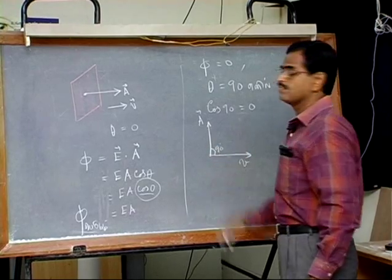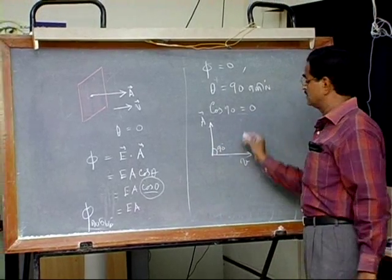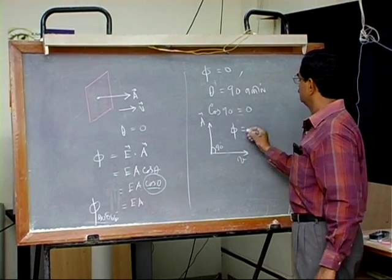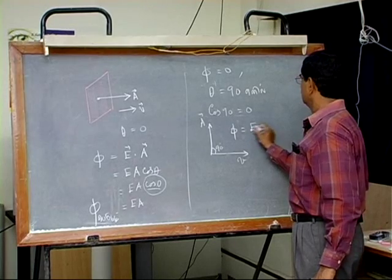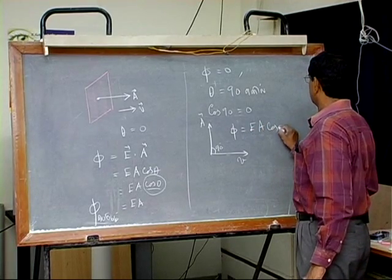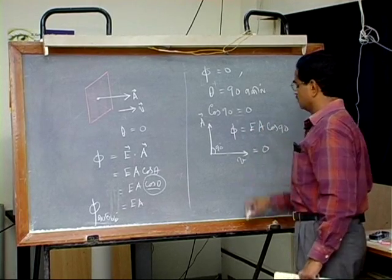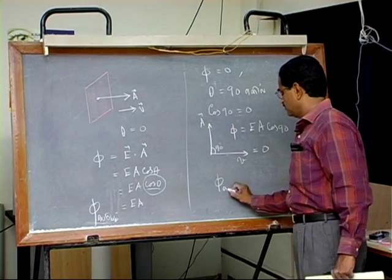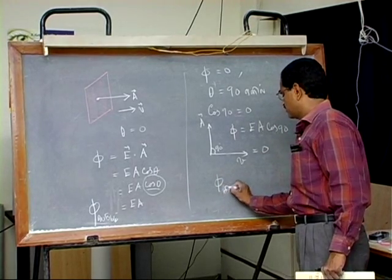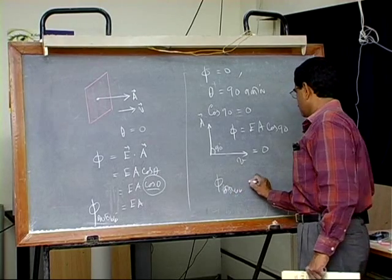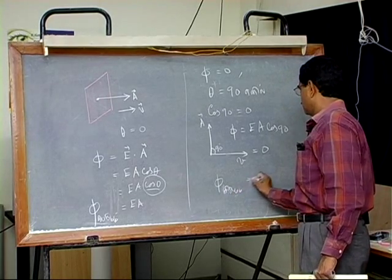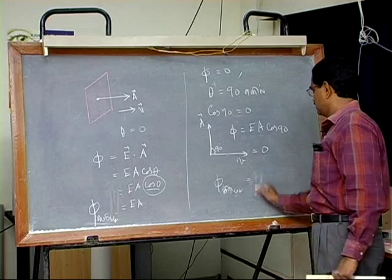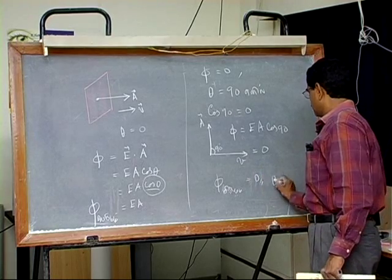Therefore, phi equal to E A cos 90 equal to 0. So phi minimum - we can all equal to 0, then theta equal to 90 degrees.